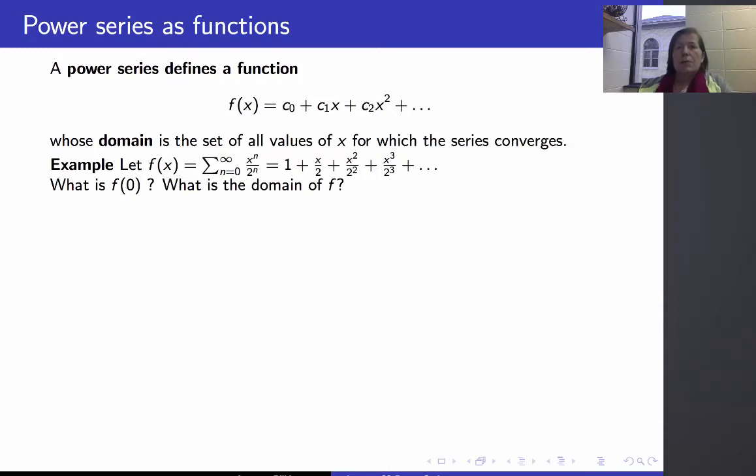To pull out the general principles of what we've been saying, we can view power series as a function. If I have a power series, the sum from 0 to infinity of c_i x to the i, where the c_i's are constant coefficients, then the function f(x) equals c_0 plus c_1 x plus c_2 x squared, and so on, is a function of x. Its domain is the set of all values where that infinite sum makes sense, so it's the set of all values for which the series converges.